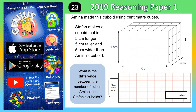We've got two different cuboids going on here. We've got Amina's cuboid, which is the one that we can see, which is 6×4×3. And then we've got Stefan making a different cuboid that's far longer, 5cm taller, and 5cm wider than the one that we can see. We're being asked for what is the difference between the number of cubes in Amina's and Stefan's cuboids — so we're being asked for the difference in volume.